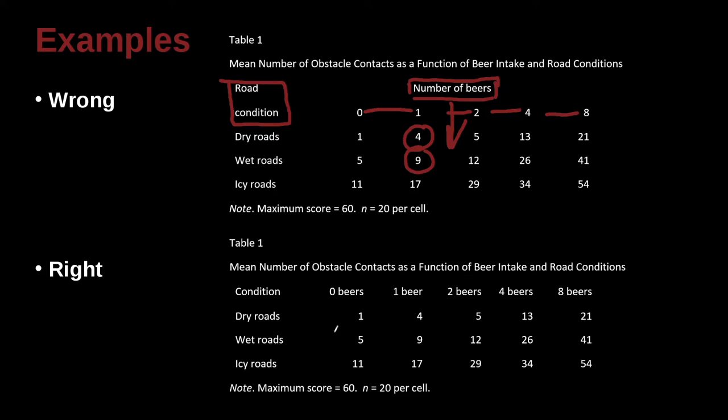Let's look at a different example down here. So the better way to write this would be, and you can see already it's shorter, the condition is here, very clear. So this is the heading for this column, and then this is the heading for this column, and then this is the heading for this column. So this is telling us one beer drunk resulted in a mean of four impacts on dry roads, nine obstacle impacts on wet roads, and 17 on icy roads.